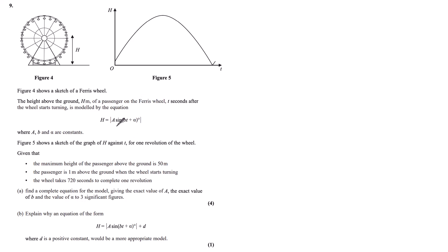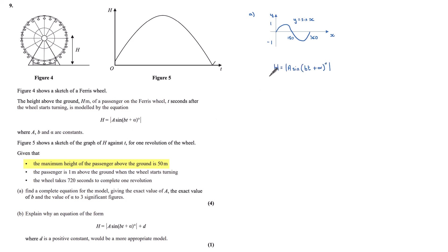The first thing I like to do in a question involving a trig equation such as this is to have a sketch of sine available. To find our constants a, b and alpha, I'm going to use the hints the question has given me. Looking at the maximum height: since sine only takes values between one and minus one, at the greatest height the sine value equals one, multiplied by a. So a must equal the highest point of the wheel — a is equal to 50, because 50 is the maximum height.